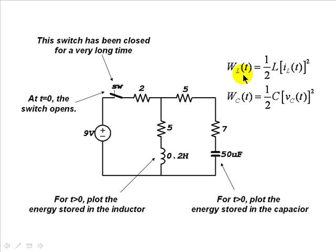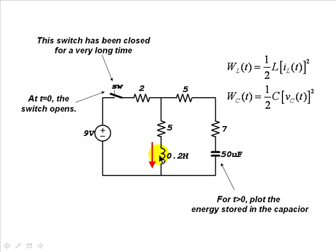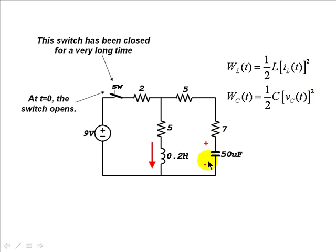The energy in an inductor is one-half the inductance times the square of the current of that inductor at any point in time. So we need to find the current in the inductor as a function of time, square it, and multiply by L over 2. The energy in the capacitor depends on the voltage across the capacitor. We need to find that current in the inductor and that voltage in the capacitor by solving this circuit for t greater than zero.